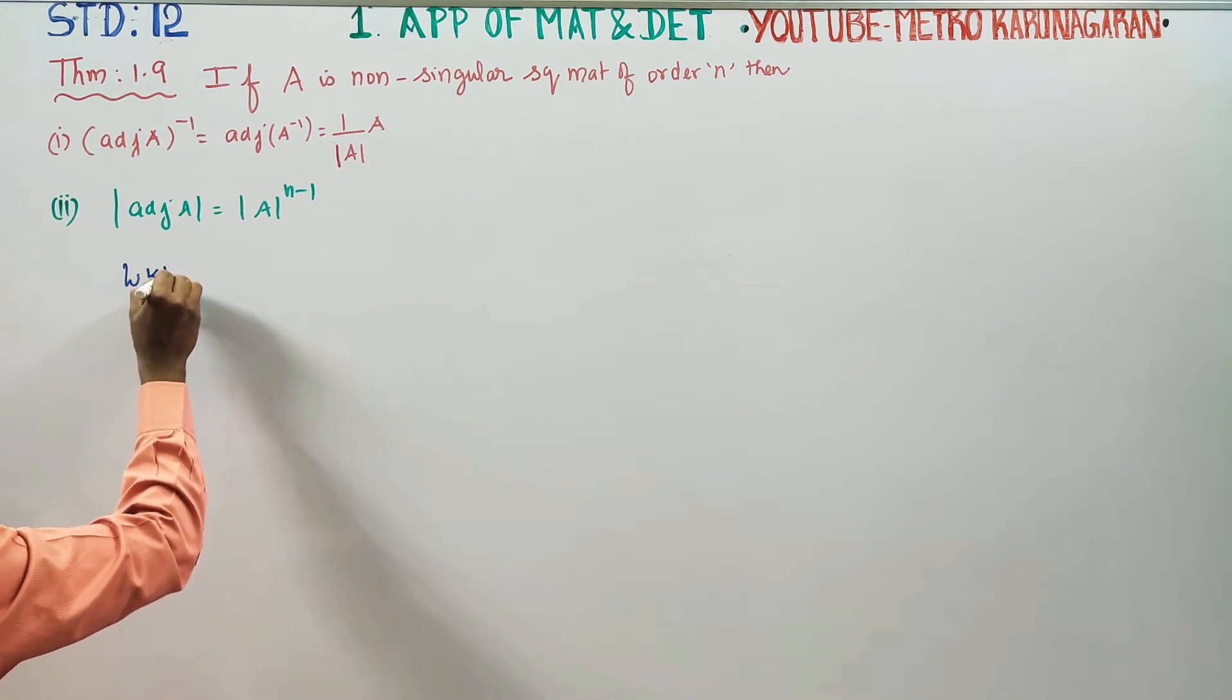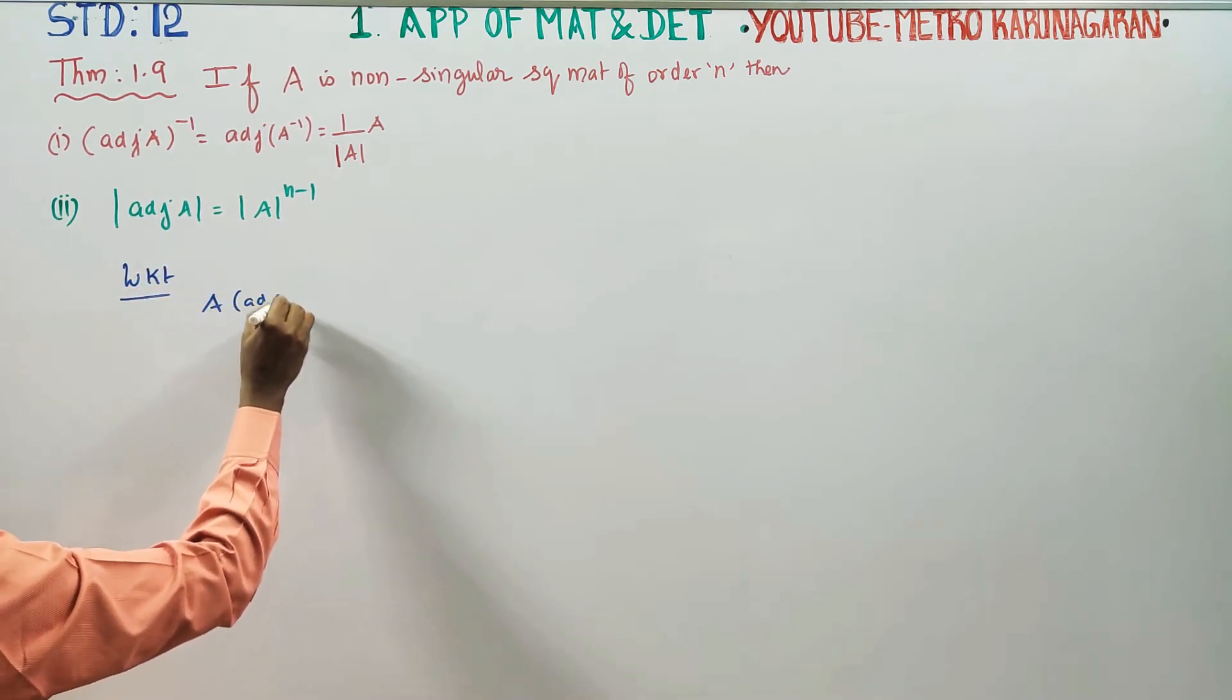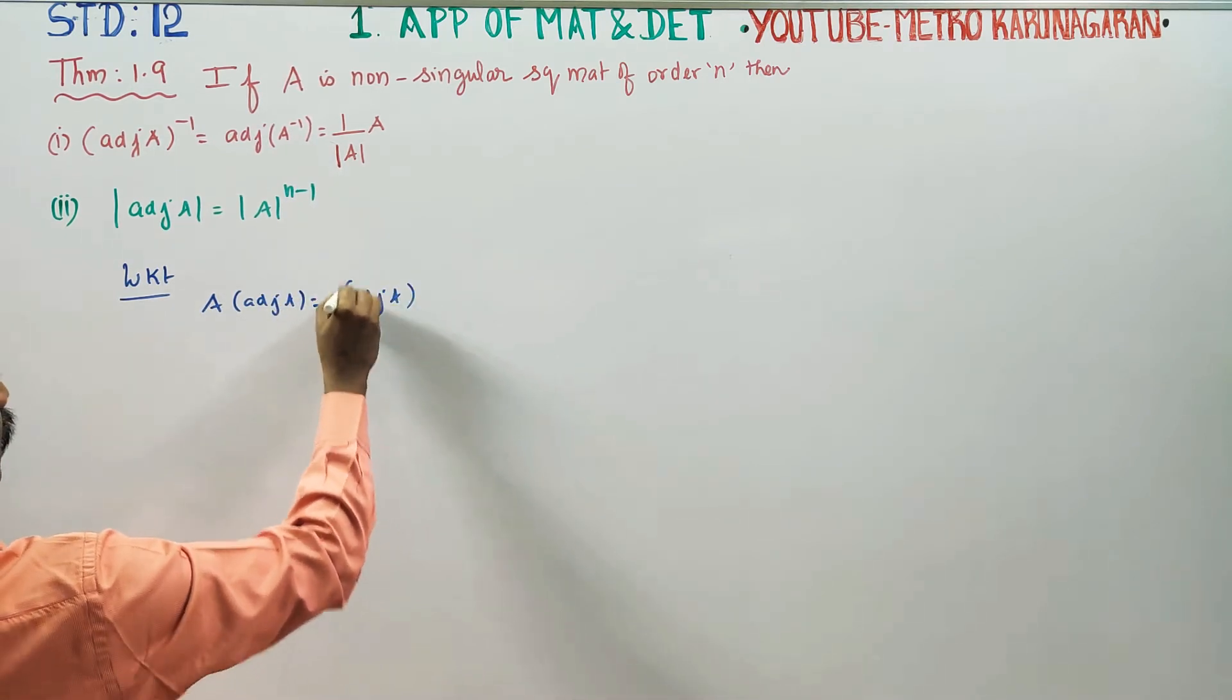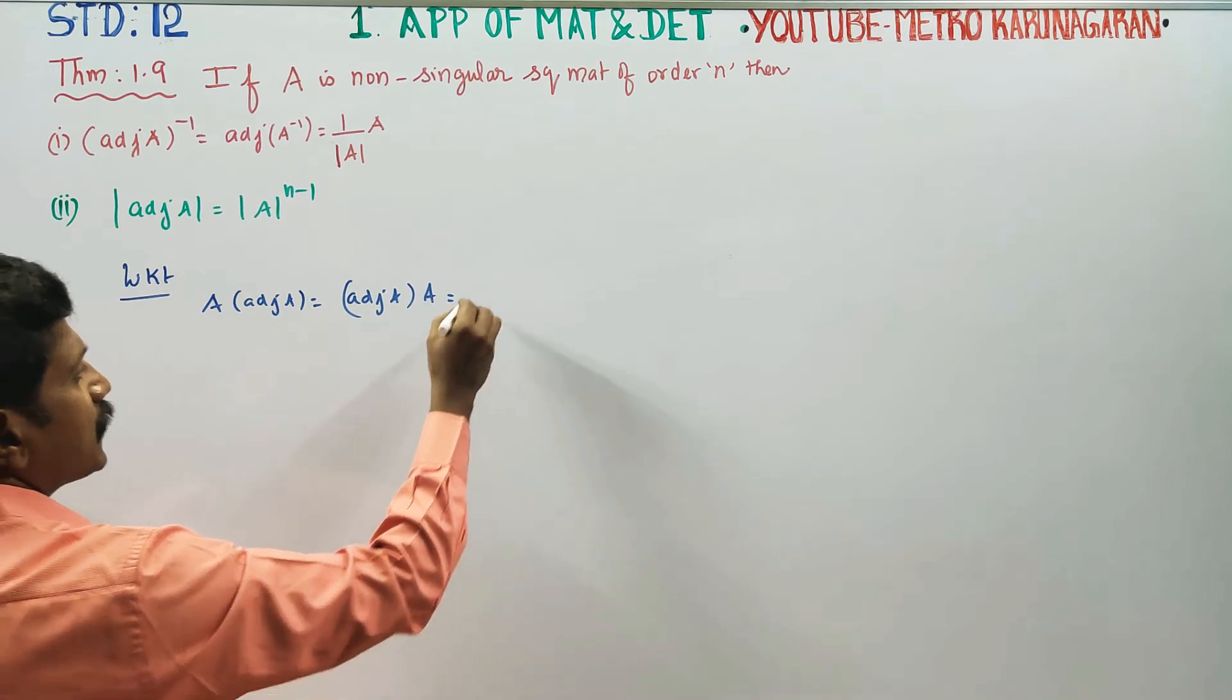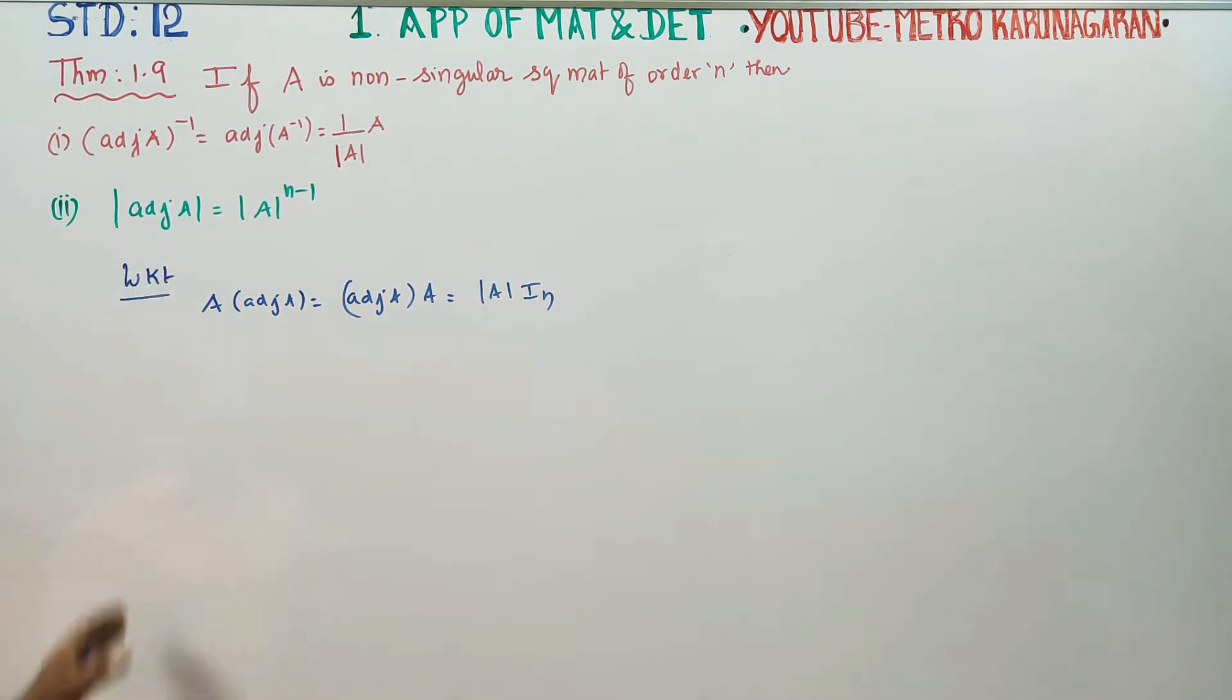We very well know that A into adjoint A is equal to adjoint A into A is equal to determinant A into I_N. This is a well known formula, Theorem 1.1.